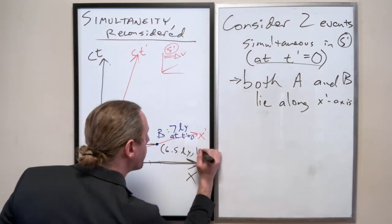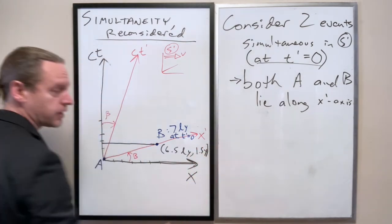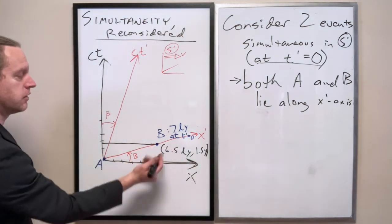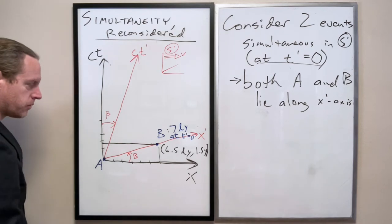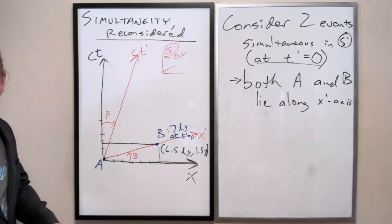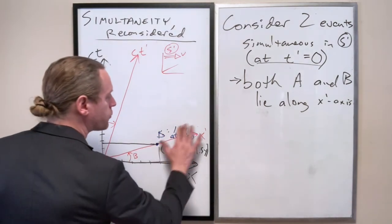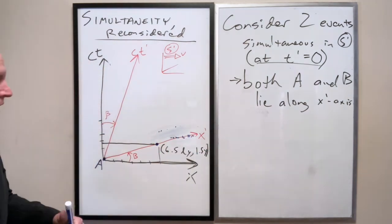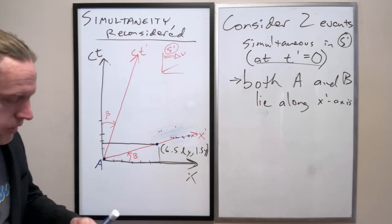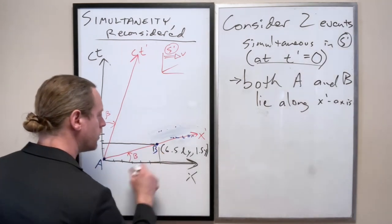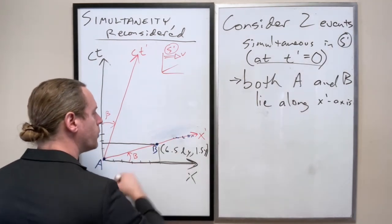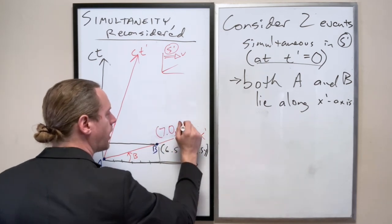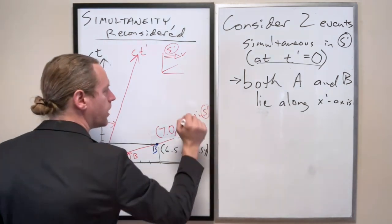So 1.5 years or something like that. So I've just stated its x, y coordinate on this diagram. And to be clear, the x, y coordinate on the primed axis would have been right here. The same thing here would have been 7 light years, comma, 0 in s prime.